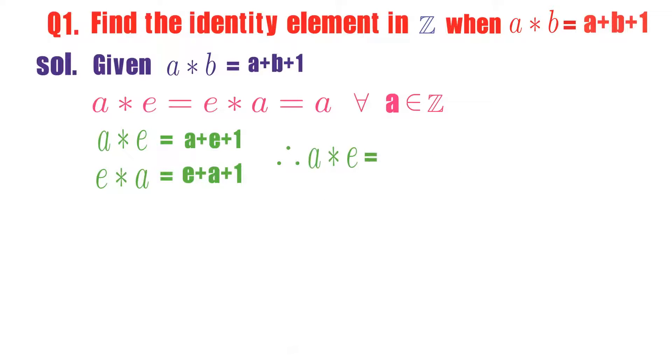Once we confirm that a star e is same as e star a, then only we will proceed to the second step. So first check that a star e is same as e star a or not.